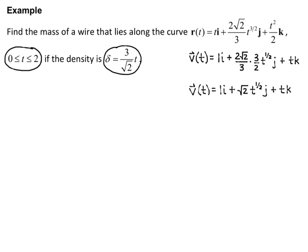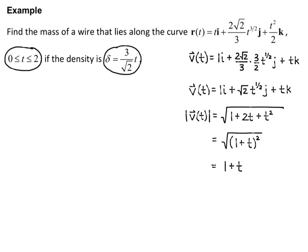Now we want the magnitude of velocity for use in the line integral. Squaring each i, j, and k term and adding them under the square root gives: √(1 + 2t + t²). That's a perfect square trinomial, equal to √((1 + t)²), and the square root and square cancel, giving 1 + t. So the magnitude of velocity is 1 + t.